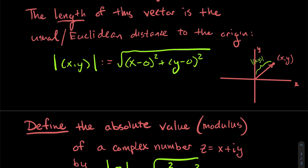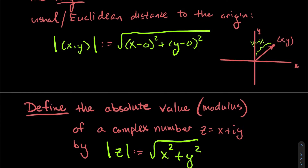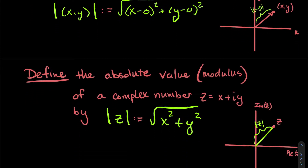We're going to define the absolute value of a complex number — sometimes called the modulus. You'll hear 'modulus' more often in a complex analysis textbook, but 'absolute value' and 'modulus' are used interchangeably. The absolute value of z is defined the same way: |z| = √(x² + y²), the real part squared plus the imaginary part squared. Notice that the absolute value of a complex number is a real number.